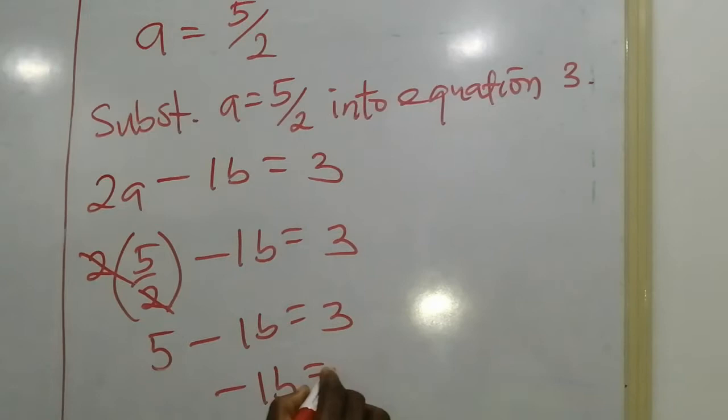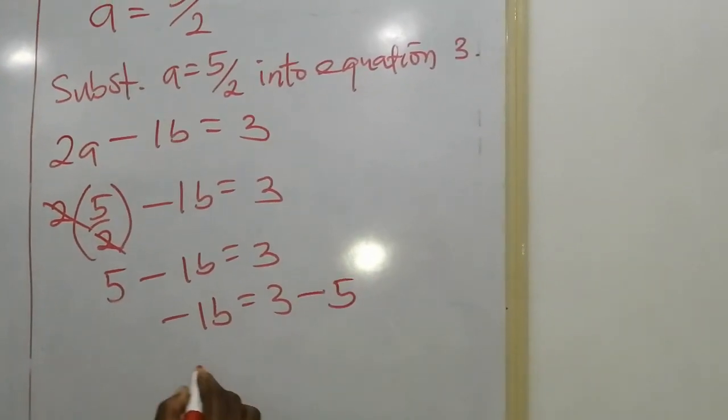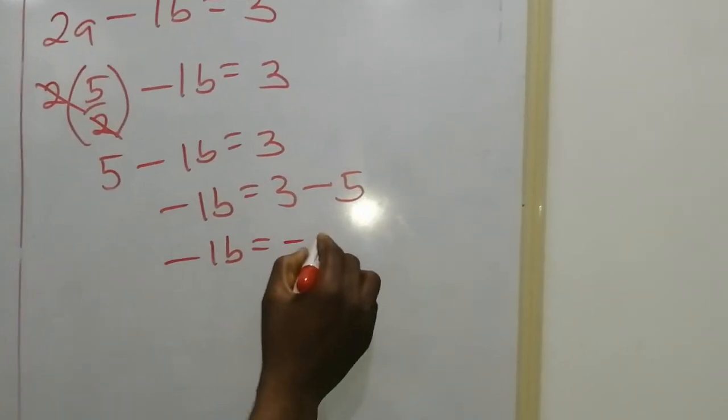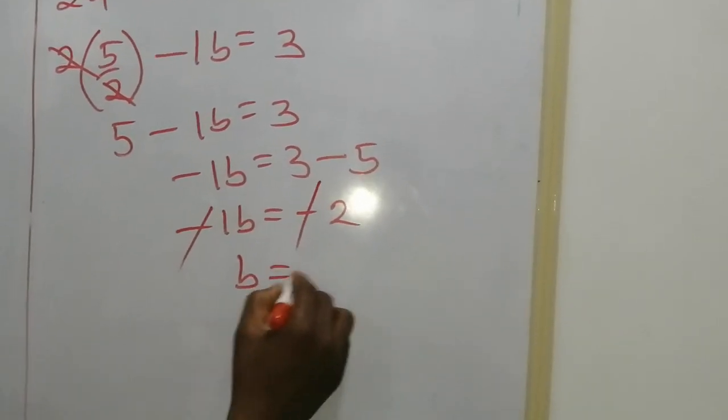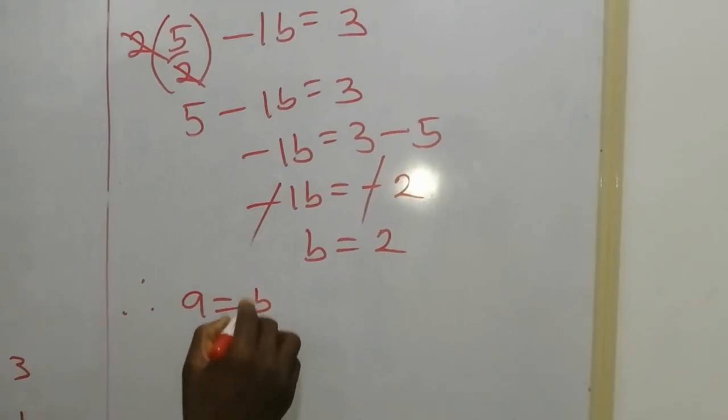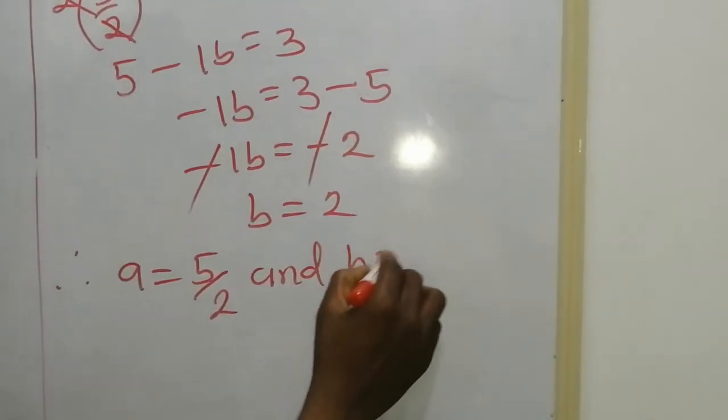Minus 1b equals 3. When 5 crosses the equality it becomes negative, so we have minus 1b equals 3 minus 5, which gives us minus 2. Then the minus will cancel minus, so b equals 2. Therefore a is equal to 5 over 2 and b equals 2.